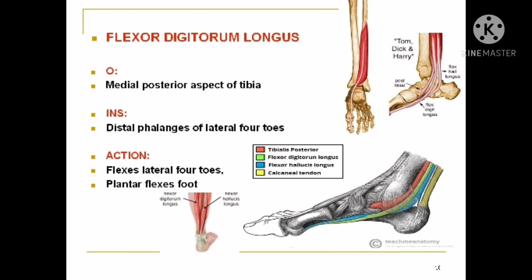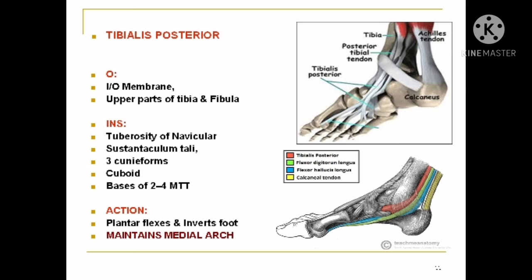The flexor digitorum longus arises from the medial posterior aspect of the tibia. Its insertion is upon the plantar aspect of the distal phalanges of the lateral four toes. The action is flexion of the lateral four toes and plantar flexion of the foot at the ankle joint. The tibialis posterior arises from the upper parts of the tibia, fibula, and the adjacent interosseous membrane. It has a broad insertion upon the tuberosity of the navicular bone, the sustentaculum tali of the talus, all three cuneiforms, the cuboid bone, and the bases of the second, third, and fourth metatarsal bones. Its action is plantar flexion and inversion of the foot, and it also maintains the medial longitudinal arch of the foot.